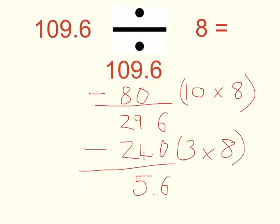So, 109.6 divided by 8 is 13 remainder 5.6.